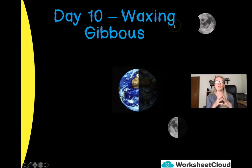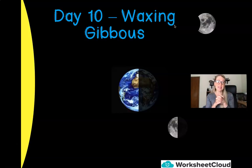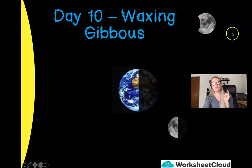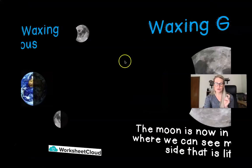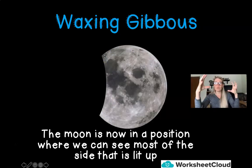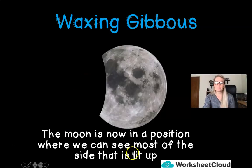The next phase continues with the waxing — remember, waxing means getting bigger. It's called gibbous, and around approximately day 10, we see a waxing gibbous. You can see it's gotten bigger — it looks like somebody's just taken a bite out of the moon, but we're starting to see more and more of the moon as it's orbiting our Earth. We can see most of the moon, though not quite all of it.